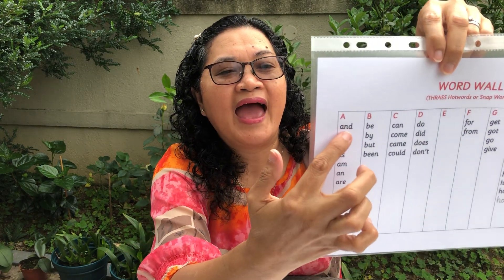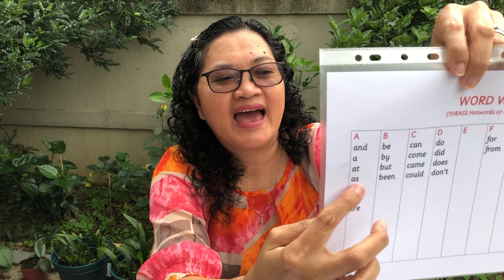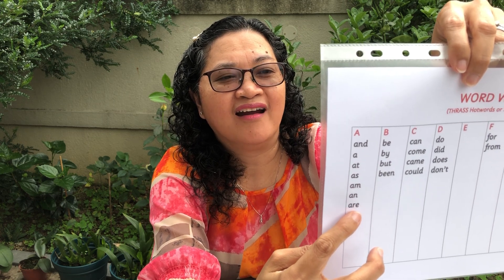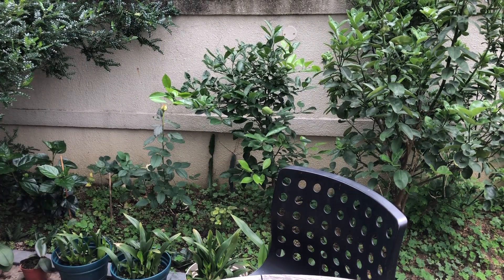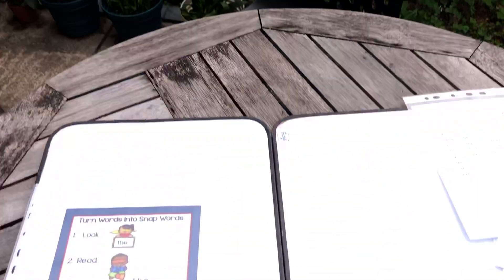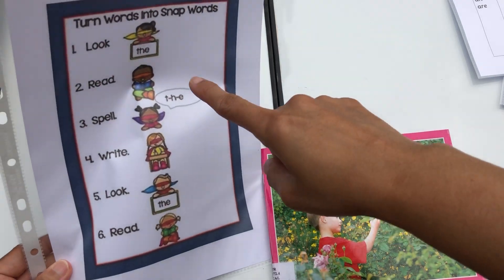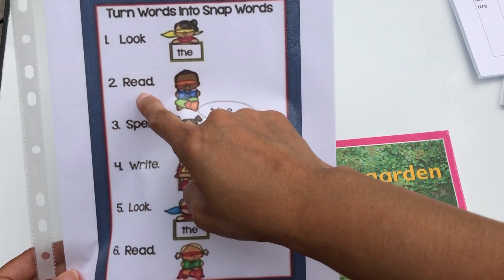Ready, go! And, at, as, am, and are. What about the words under letter B? Be, by, but, been. Wow, you read them all in a snap — very quick! So today I want to teach you that super readers can make more snap words for themselves. If you want to turn a word into a snap word, you do this: you look, you read, you spell, you write, look, and then read. Let me show you how it's done.